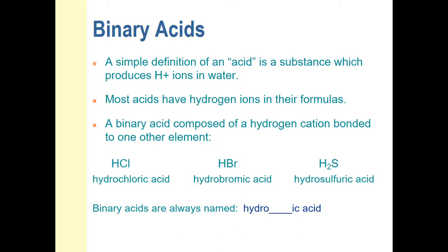HF would be hydrofluoric acid. What would H3As be? Hydroarsenic acid. H2Se — look where selenium is — hydroselenic acid. The suffix works out by dropping the ending and adding -ic. It's sometimes just what sounds better to the ear. So that's binary acids: pretty simple. If you see a name that says hydro-something-ic acid, that's obviously an acid and the hydro at the beginning tells you it must be binary.